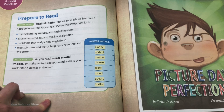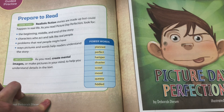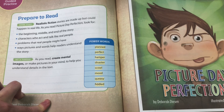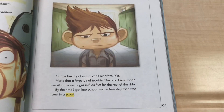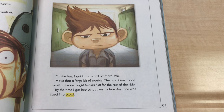As you read Picture Day Perfection, look for the beginning, middle, and end of the story; characters who act and talk like real people; problems that real people might have; and ways pictures and words help readers understand the story. Turn to page 91 — I'm going to reread pages 91 to 94, so listen or follow along.